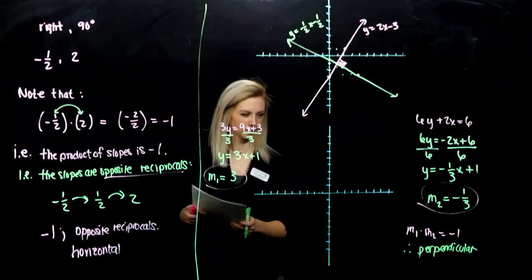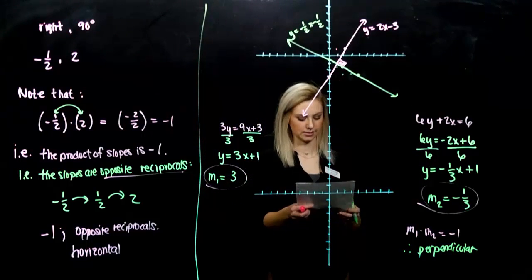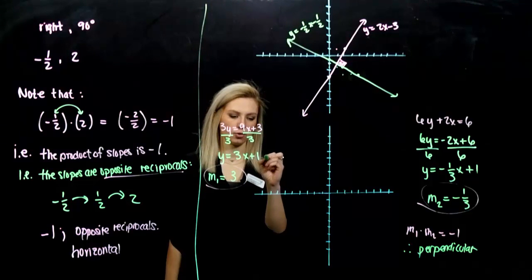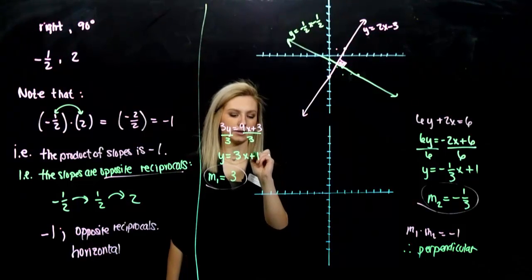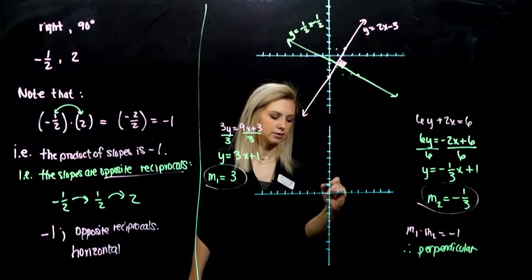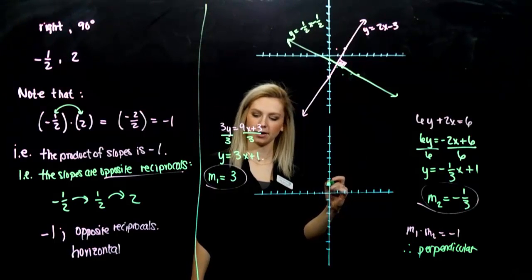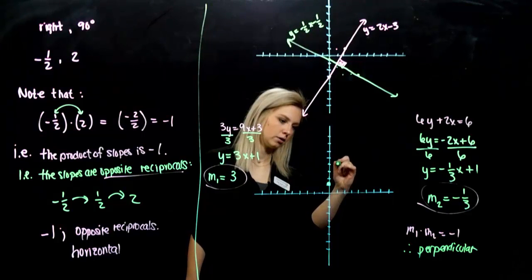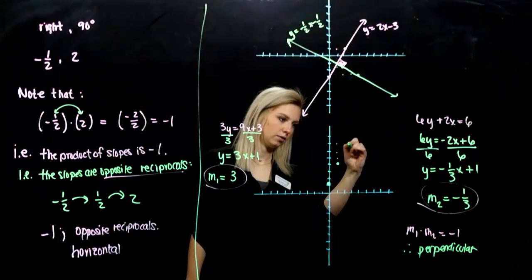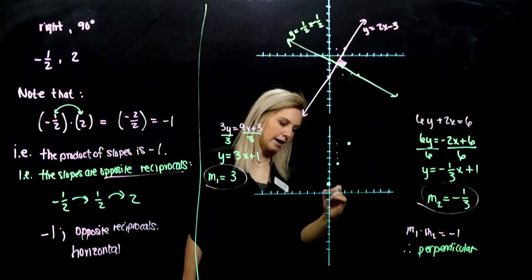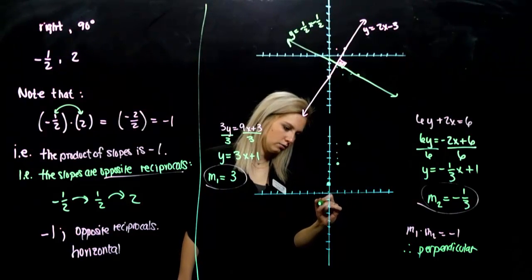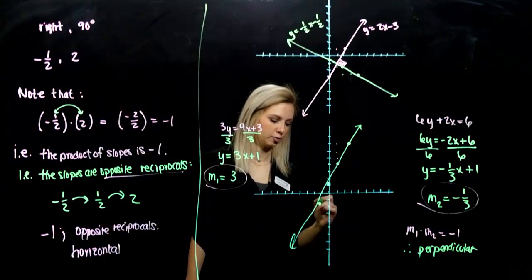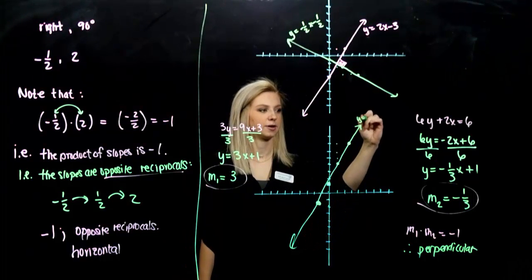But let's just graph to get some more practice with graphing and to see the relationship kind of unfold. So the first line, I'm going to make him green. And he has a y-intercept of 0, 1. From there, I want to move according to the slope. Up 1, 2, 3, over 1. 1, 2, 3, over 1. Or down 1, 2, 3, back 1. So this one will also fall on that line, if your picture is accurate. So this is the first.